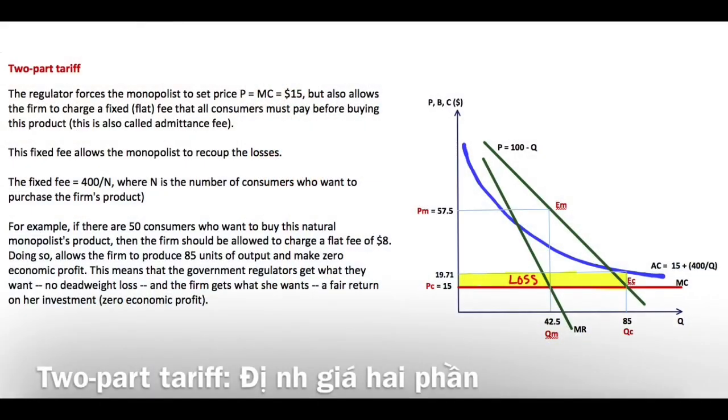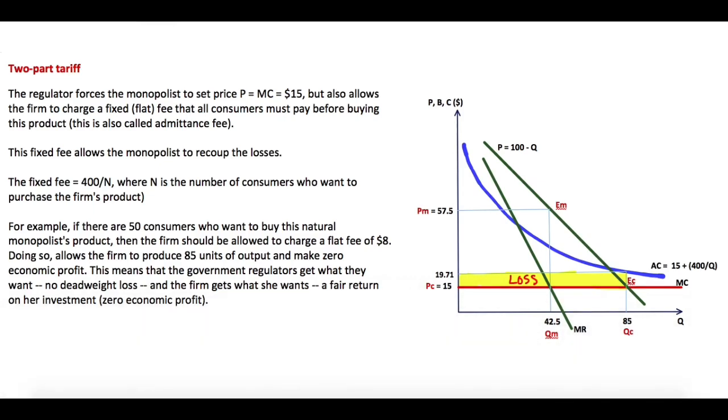So what is two-part tariff? Two-part tariff means the regulator forces the monopolist to set the price equal to marginal cost, equal to $15. But also allows the firm to charge a fixed fee or flat fee. This fixed fee means that all consumers must pay before buying this product.